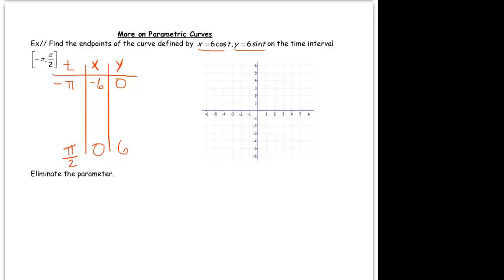So if we just plot those two points, negative 6, 0 and 0, 6. This is when t equals negative pi, this is when t equals pi over 2. So pi seconds ago, the point was here, and in pi over 2 seconds, it's going to be right here. So the answer to the question, the endpoints are negative 6, 0 and 0, 6. So there's answering the question. But what about the details? What happens in between?